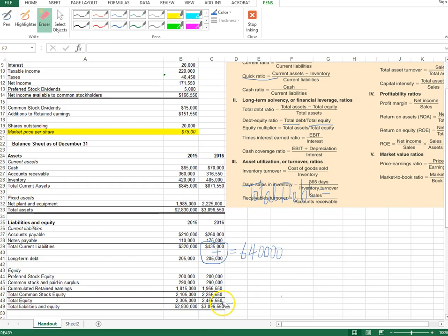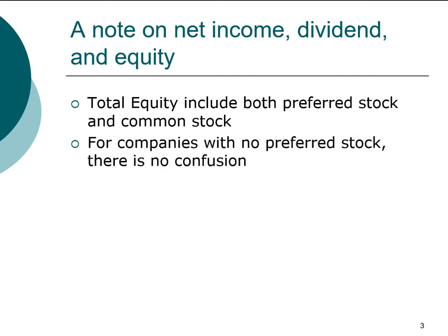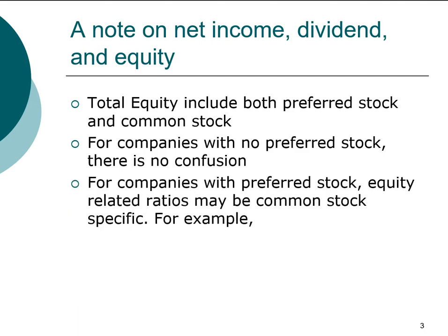The difference between total equity and total common stock equity arises when a firm uses preferred stock. The accounting definition of total equity includes both preferred stock and common stock. Preferred stock is not common for most companies, but it is becoming more popular due to venture capital firms, which often retain preferred stocks when they take a company public.